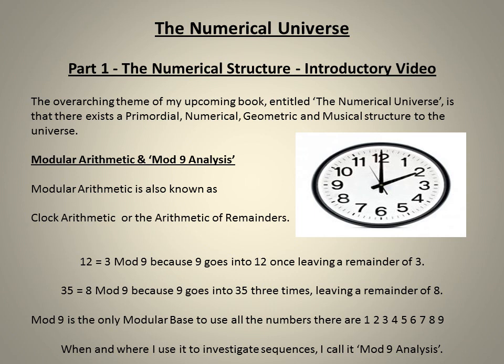Mod is short for modular. Modular arithmetic is sometimes known informally as clock arithmetic. In modular arithmetic, numbers wrap around upon reaching a given fixed quantity, known as the modulus — 12 in the case of hours on a clock, or 60 in the case of minutes or seconds. I like to think of modular arithmetic as the arithmetic of remainders. For example, in mod 9, 12 equals 3 because 9 goes into 12 leaving a remainder of 3. So we write 12 equals 3 mod 9.